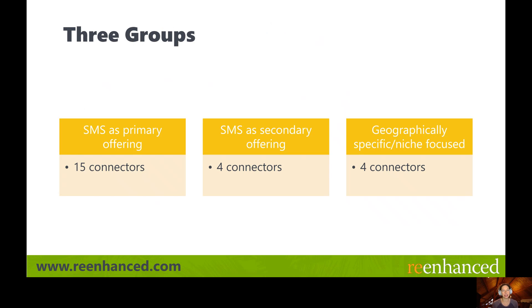There are 23 connectors and we were able to put these into three different groups. The first group — which we'll focus on today — is SMS as a primary offering. These connectors eat, sleep, and breathe SMS, and there are 15 of them. There are four connectors that have SMS as a secondary offering, mostly marketing automation first with SMS as a small portion. Finally, there are four connectors with an extreme geographic or niche focus. We'll point out who they are, but we're not going to dive into too much detail on them today.